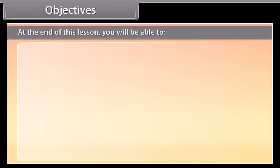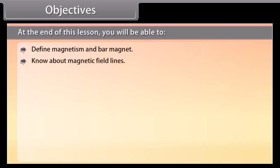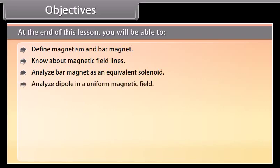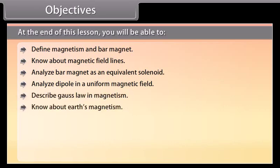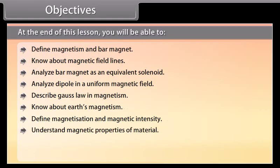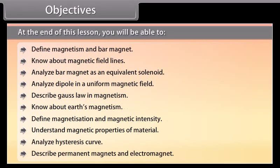At the end of this lesson you will be able to: define magnetism and bar magnet, know about magnetic field lines, analyze bar magnet as an equivalent solenoid, analyze dipole in a uniform magnetic field, describe Gauss's law in magnetism, know about Earth's magnetism, define magnetization and magnetic intensity, understand magnetic properties of material, and analyze hysteresis curve. Describe permanent magnets and electromagnets.